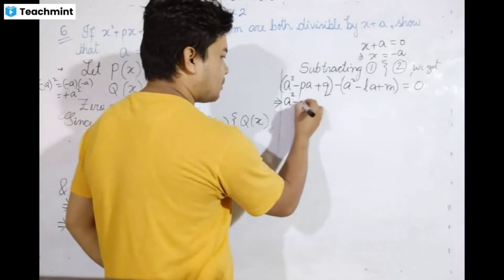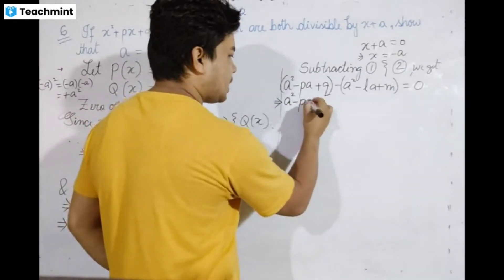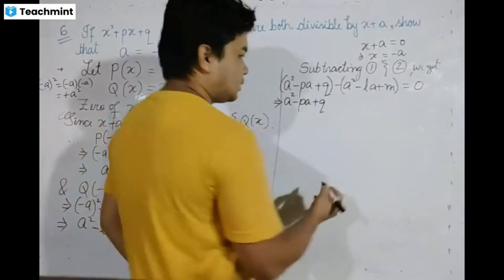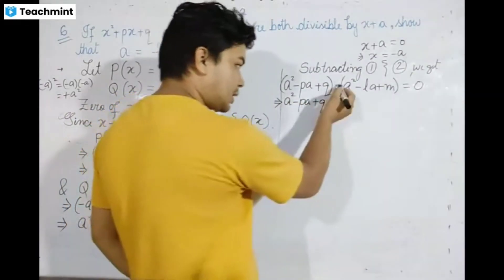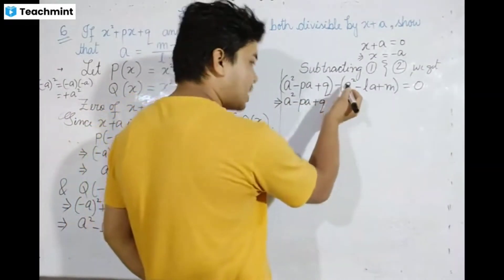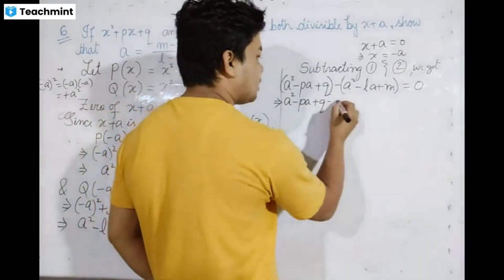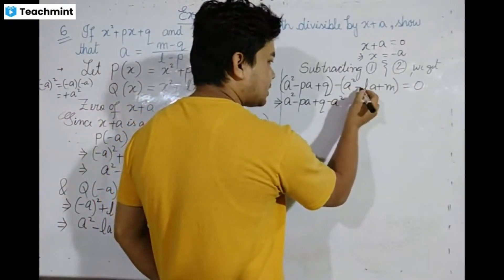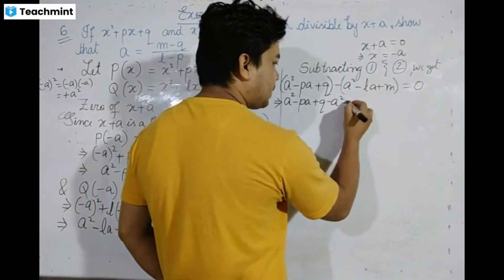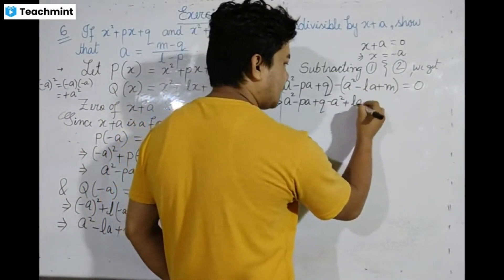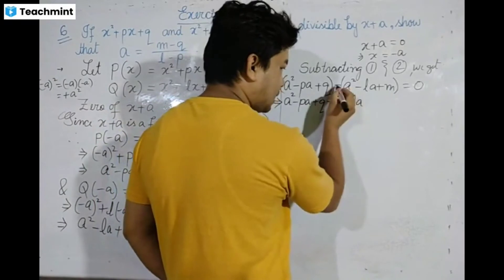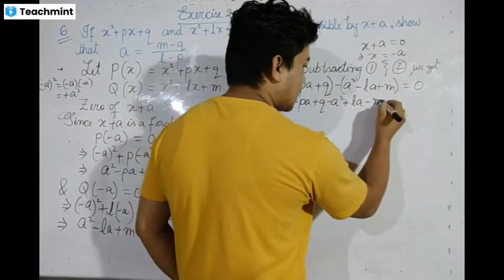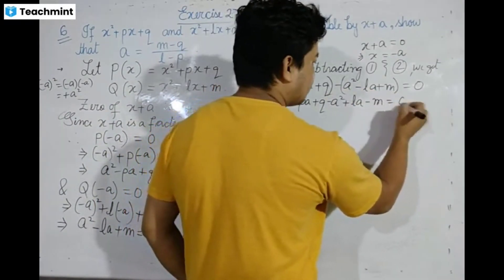We get: a squared minus pa plus q, minus a squared minus la plus m, is equal to zero. Simplifying: minus pa plus la plus q minus m equals zero, which gives us la minus pa equals m minus q.